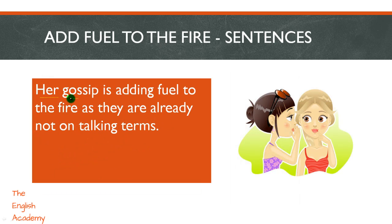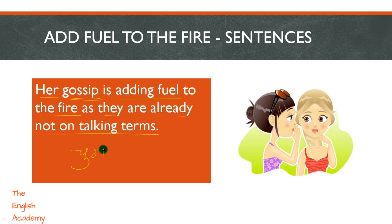Ek aur sentence hai: 'Her gossip is adding fuel to the fire, as they are already not on talking terms.' Is sentence mein hum kehna chahte hain ki yeh ladki pehle hi apni friend ke saath baat nahi kar rahi, aur doosri ladki uske saath gossip kar rahi hai — yaane ke chugli kar rahi hai. Aur uski chuglion se kya ho raha hai? Unki jo apas mein narazgi hai woh badh rahi hai. And that is why her gossip is adding fuel to the fire — pehle se hi unke apas mein trouble chal rahi hai, aur uski gossip us trouble ko badha rahi hai.